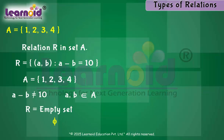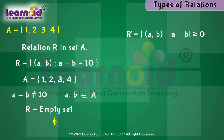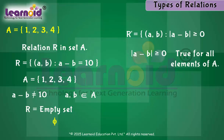Now, let us define another relation R dash such that the absolute value of a minus b is greater than or equal to 0. The absolute value of a minus b is always greater than or equal to 0 for all elements of set A. So, R dash is equal to A cross A.